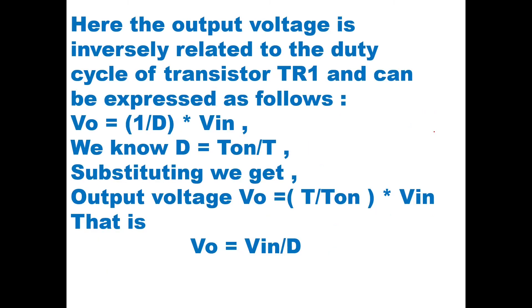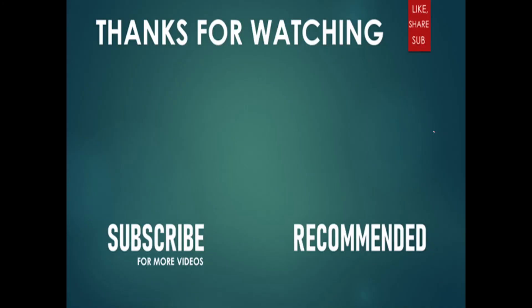In the step-up configuration, the output voltage is inversely related to the duty cycle and is expressed as: v_0 = (1/D) × V_in. Since D = t_on / T, substituting gives v_0 = (T / t_on) × V_in = V_in / D. Since D is less than one, the value of v_0 is more than V_in. So in this video we have seen the definition of a switching regulator and its two types: step-down configuration (output less than input) and step-up configuration (output more than input). Thank you very much.